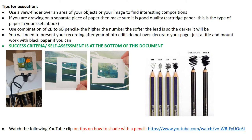Here are some tips on the execution of your drawing. You may want to use a viewfinder over an area of your objects or over an area of your photograph or image to find interesting compositions. Here are some images of examples of viewfinders: the first on the left is a square viewfinder, the second is a rectangular portrait viewfinder, and the third is a rectangular landscape viewfinder. Please make sure the orientation of your paper is correct — portrait or landscape.